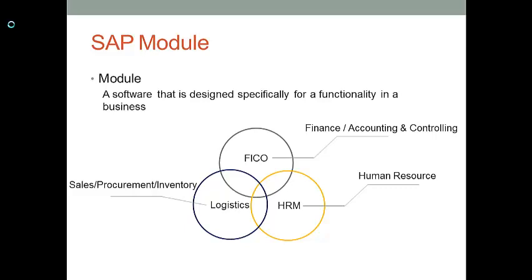The logistics module is the third core module in the SAP ERP system. Sometimes it's called the SCM module — the supply chain management module. In this module we record information about sales, procurement, and inventory transactions. Procurement is the process of purchasing raw materials and then storing them in the warehouse. We record all information about the product flow in the company in the logistics module.